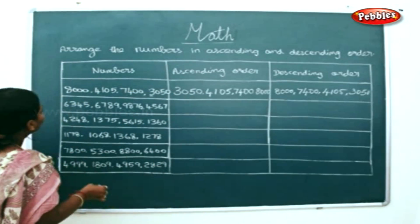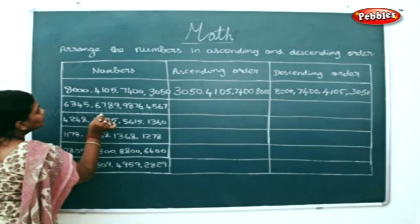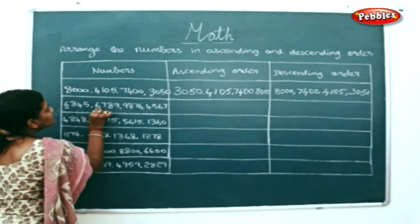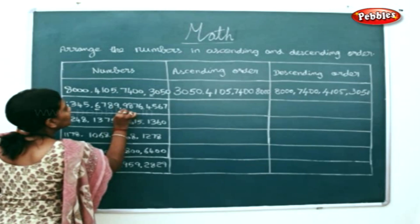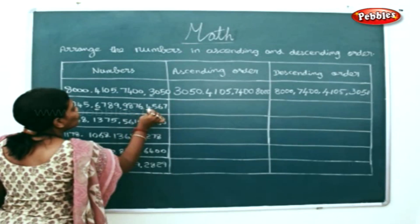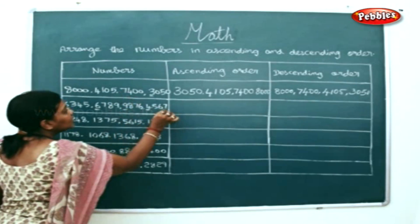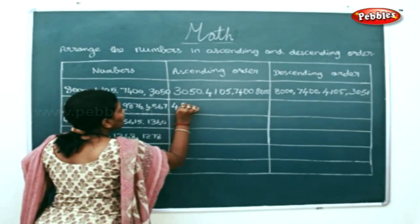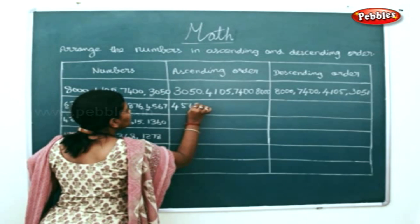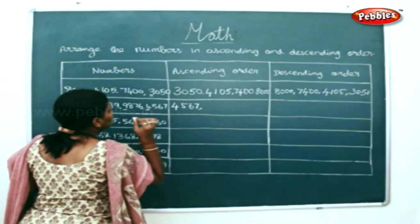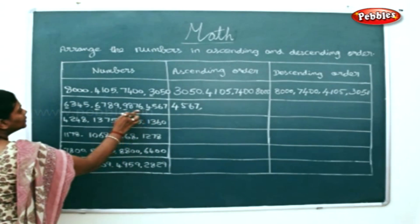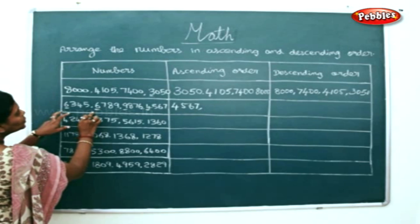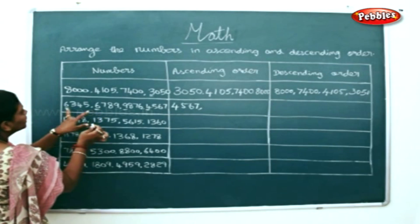Next sum — check the thousands places: 6, 6, 9, 4. Which is least here? 4, 567. Next will be, if you see, you have 2, 6 here.